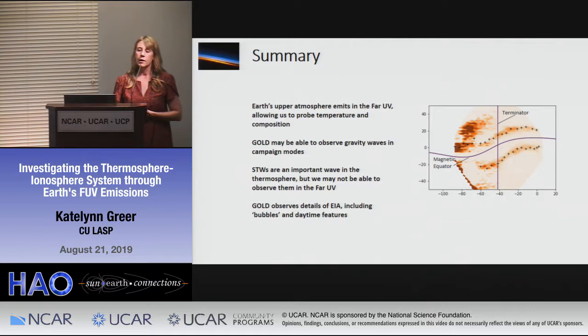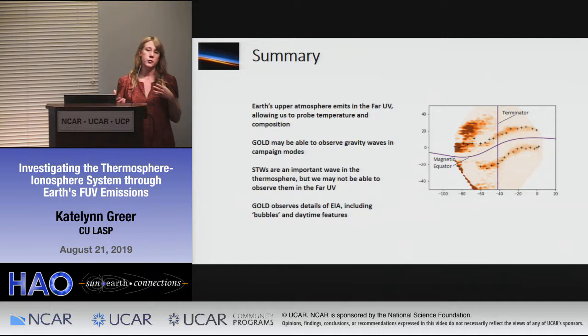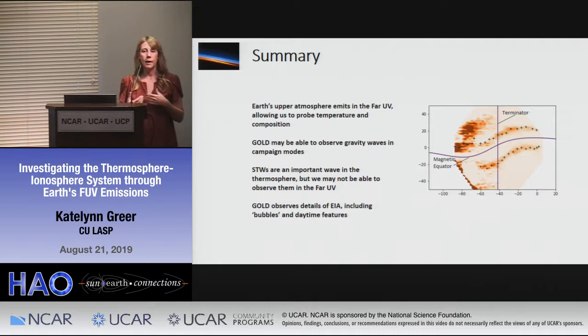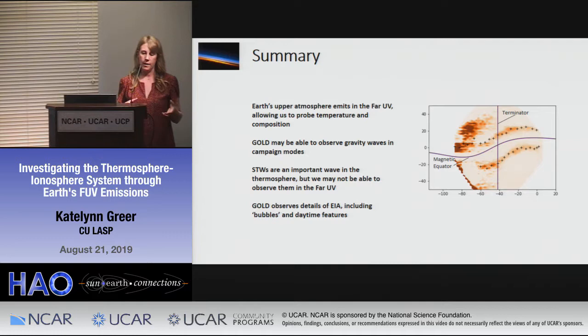To summarize: Earth's upper atmosphere emits in the far ultraviolet and we can use this to get temperature, constituent information of the thermosphere, and density of the ionosphere. GOLD may be able to observe gravity waves in specialized campaign modes, and we have some planned. Solar terminator waves are very interesting but I haven't found them in GOLD data thus far. GOLD is able to observe details of the equatorial ionospheric anomaly, including plasma bubbles and daytime features.